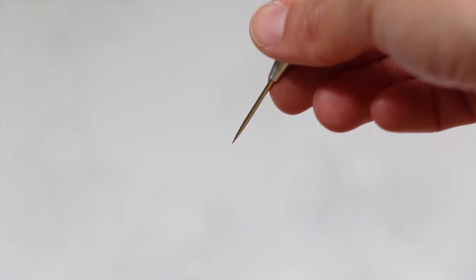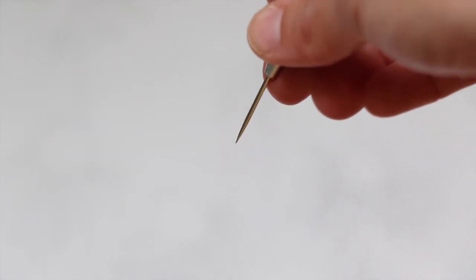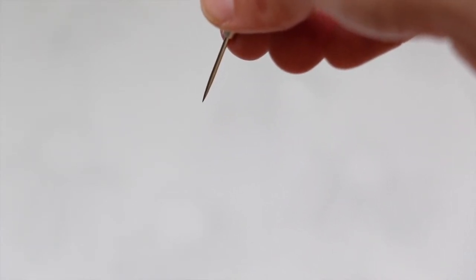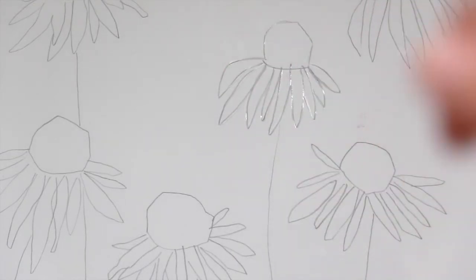Everywhere that I carve with this needle tool is going to be where the ink is. I'm going to wipe away the rest of the plate and that will be clean. If I want an area darker, like if some of the petals are overlapping, I can do little crosshatch marks to make it seem like it's darker.